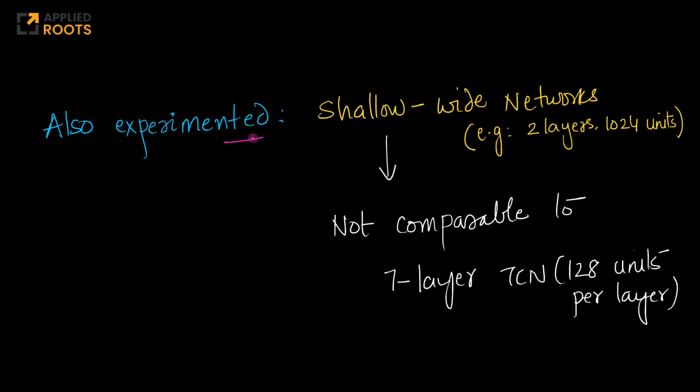They tried something called shallow and wide networks - instead of a seven layered TCN with 128 units per layer, they tried just two layers with 1024 units. But the performance of these shallow and wide alternatives was no way comparable to a seven layer TCN with 128 units per layer.